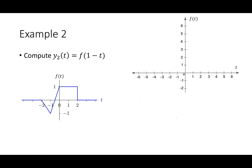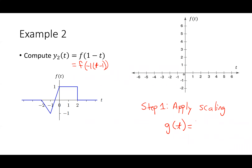Let's do another example: F of 1 minus T. First I factor the argument. F of 1 minus T equals F of negative 1 times (T minus 1). My scaling factor is negative one. Step one is to apply the scaling: compute G of T equal to F of negative T. A negative sign in front of the time argument mirrors the function.